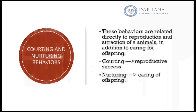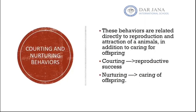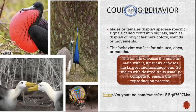Now we are going to understand behaviors directly related to reproduction and caring for offspring. The behavior related to reproduction is called courting behavior, done through courtship rituals. The behavior related to caring for offspring is called nurturing behavior.